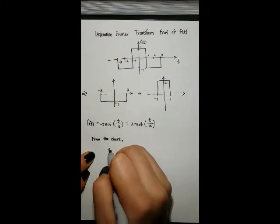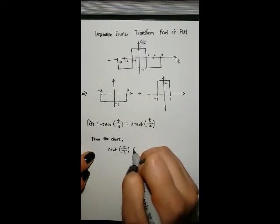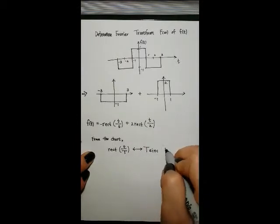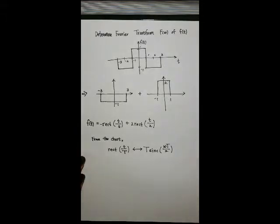Now, we refer to the chart that gives us the Fourier transforms of functions. We realize that the Fourier transform of a rectangular function is as follows.